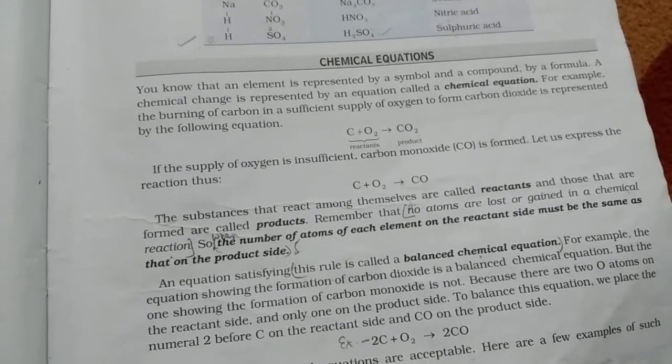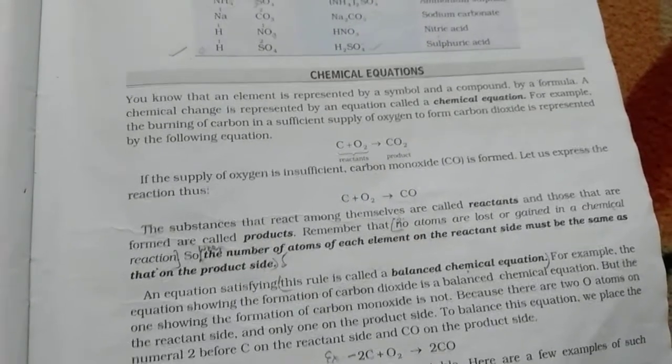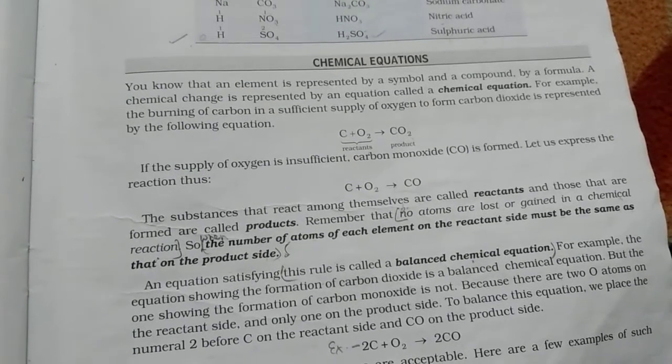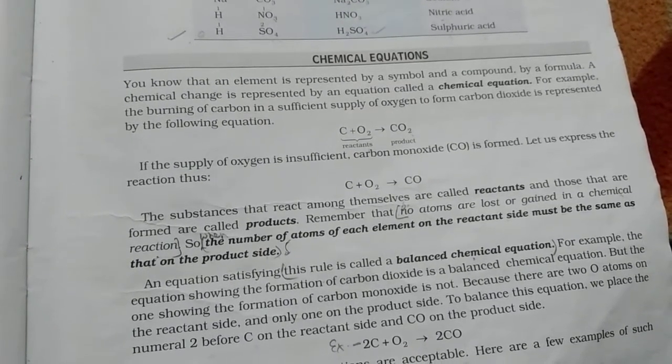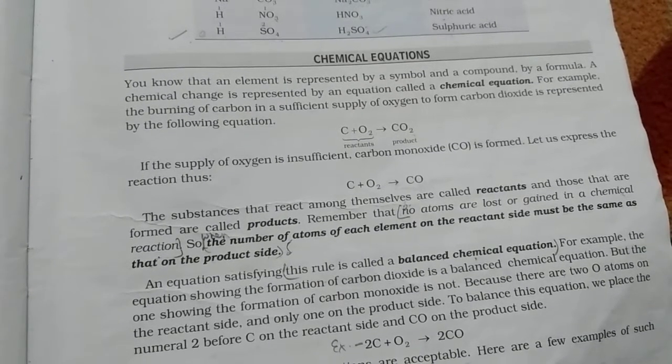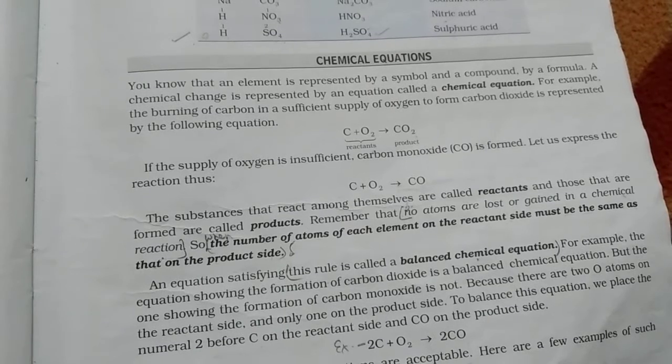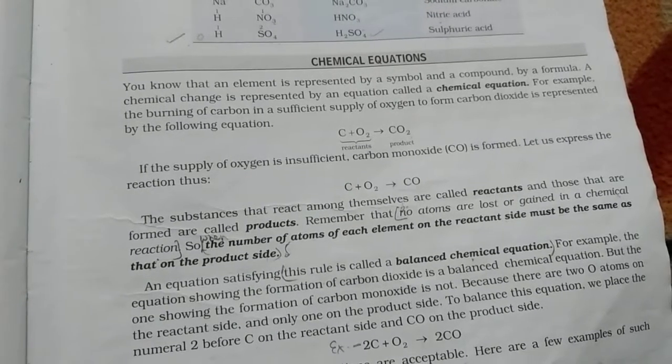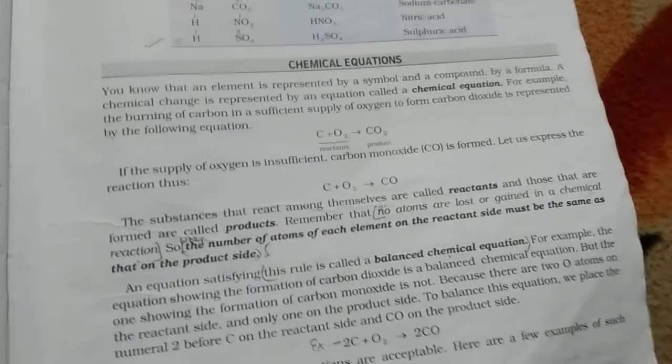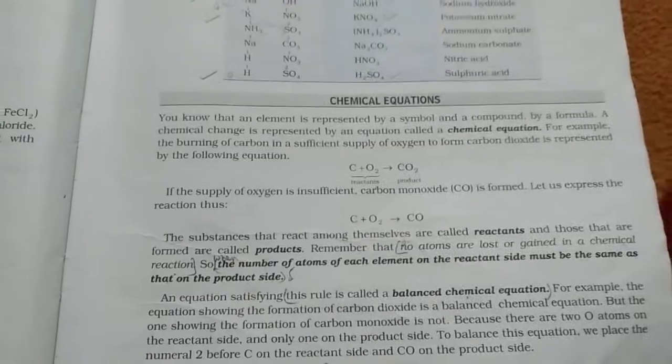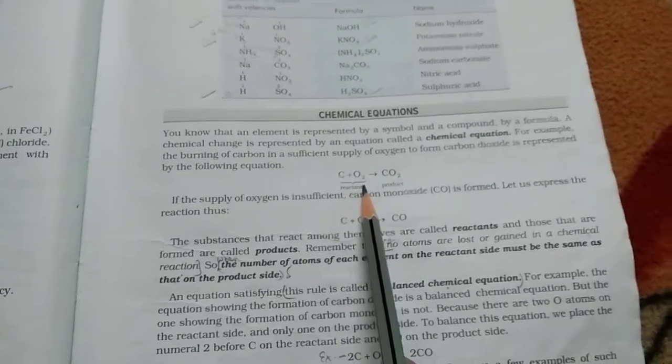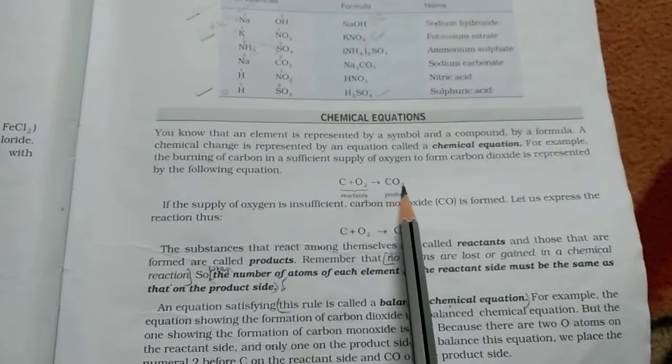We know that an element is represented by a symbol and a compound is represented by a formula. A chemical change is represented by an equation called a chemical equation. Like, if we take the reaction, the burning of carbon in a sufficient supply of oxygen to form carbon dioxide is represented by the following equation. The equation is, the reaction is carbon plus oxygen is equal to carbon dioxide.